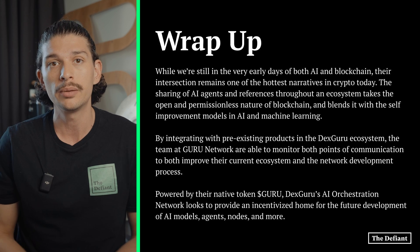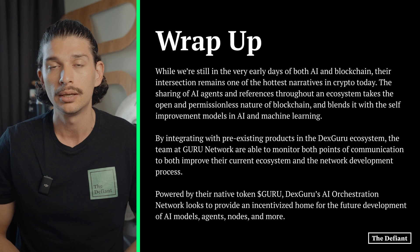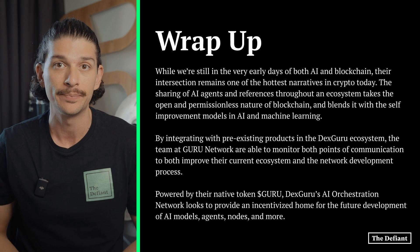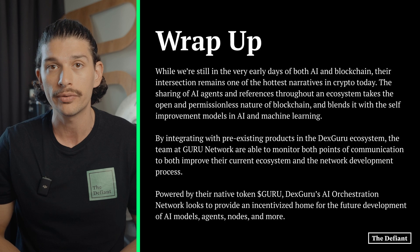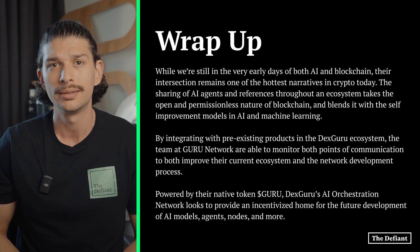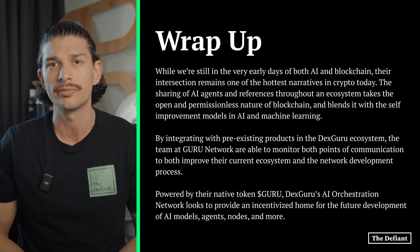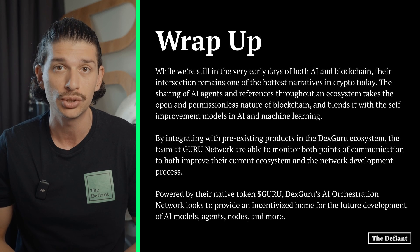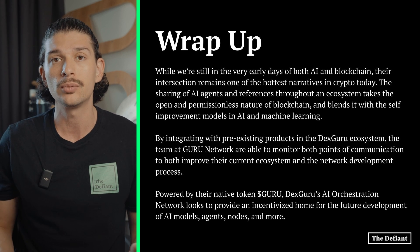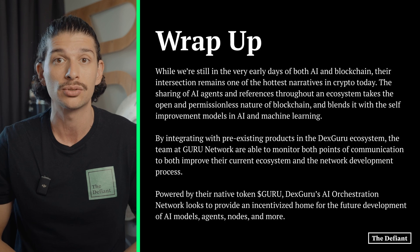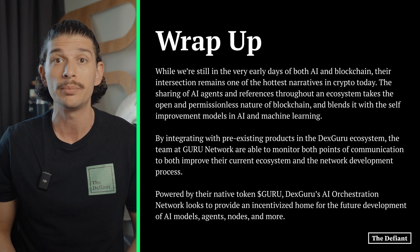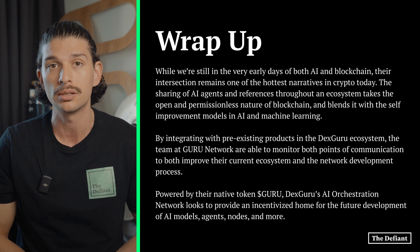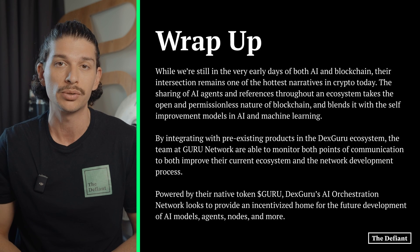While we're still very much in the early days of both AI and blockchain, their intersection remains one of the hottest narratives in crypto today. The sharing of AI agents and references throughout an ecosystem takes the open and permissionless nature of blockchain and blends it with the self-improvement models in AI and machine learning. By integrating with pre-existing products in the DexGuru ecosystem, the team at Guru Network are able to monitor points of communication to both improve their current ecosystem and the network development process.